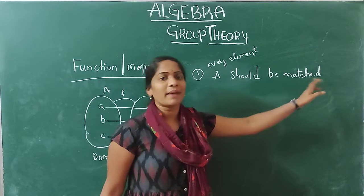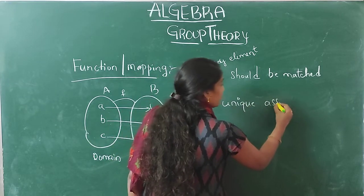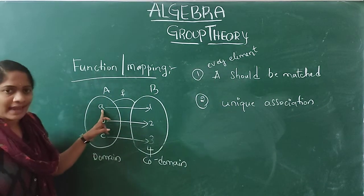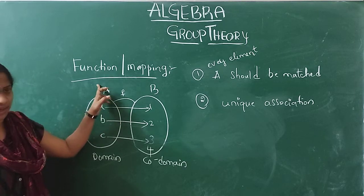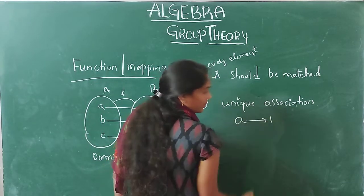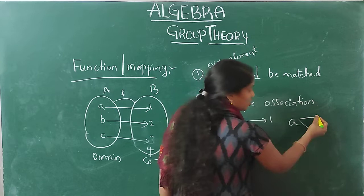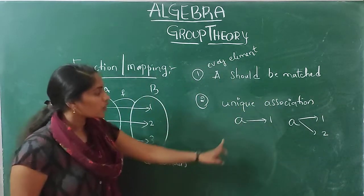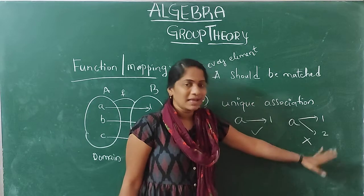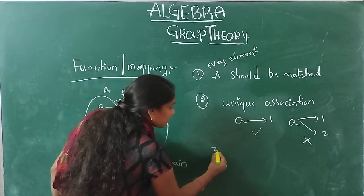The second property is that it should be a unique association — multiple associations are not allowed. For example, if element a in A maps to both 1 and 2, that is not allowed. Only a unique association is permitted, meaning every domain element should map to exactly one image.